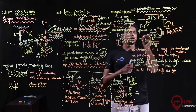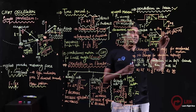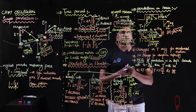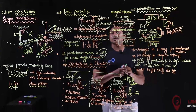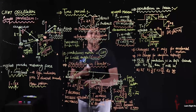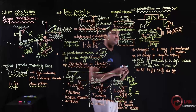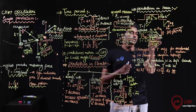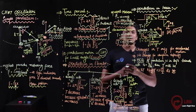So the effective acceleration in this case is √(a² + g²). We put this effective acceleration value in place of g in the time period formula.